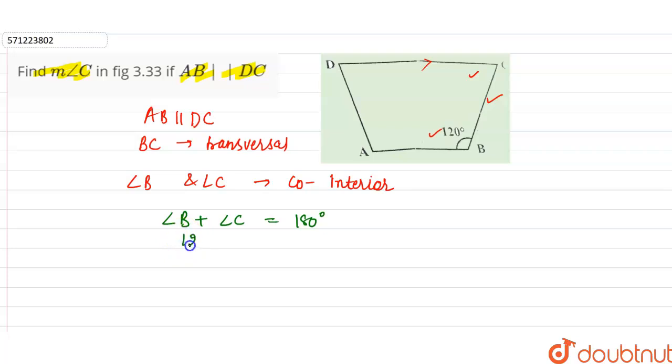We have angle B, the value of angle B is 120 degrees. So 120 degrees plus angle C is equal to 180 degrees. So angle C will be equal to 180 minus 120 degrees, which equals 60 degrees. So angle C will be equal to 60 degrees and this is the required answer.